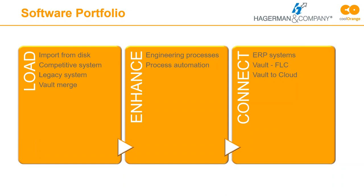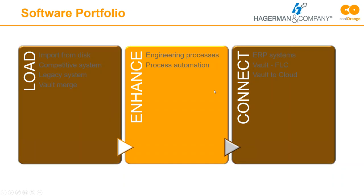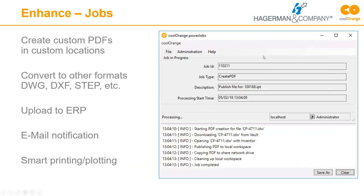Power Jobs and Power Events software provide a lot of capability in that area. Then there's the 'connect' area — connecting with ERP systems, Vault Fusion Lifecycle, or really Vault to any cloud system. The connect piece involves Power Gate, where you're not just pushing data one way; it's a full connection to other business systems, whether on-premise or cloud, that allows data to be communicated back to the Vault environment. Today we're focusing on the enhanced products.